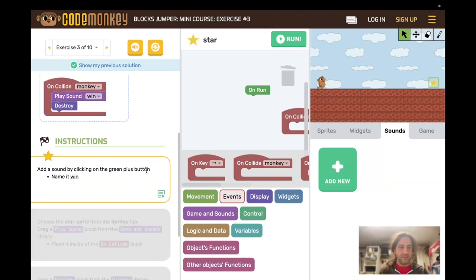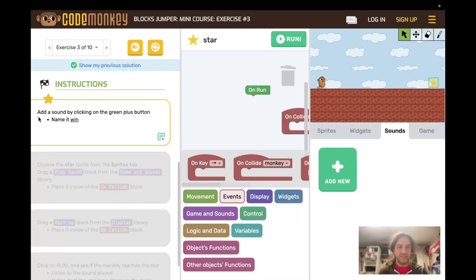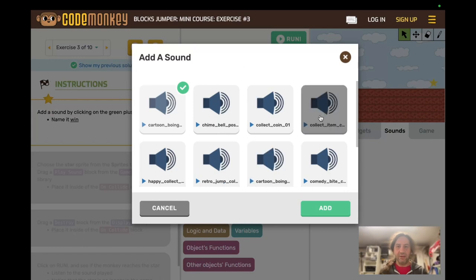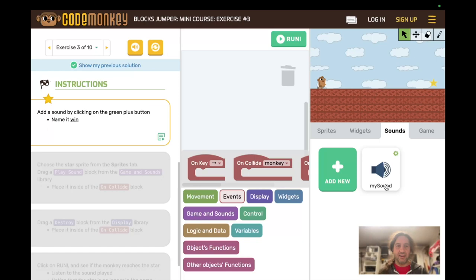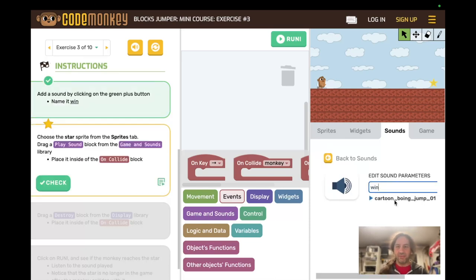Okay now we're in the star and it tells us a lot of things about on collide. But the first instruction is add a sound by clicking on the green plus button. So they've pre-selected the sounds tab. If the student is clicked off of the sounds tab they won't know what's going on. So sounds tab add new. They can pick any sound and they might have fun with that. You might want headphones to allow them to play the sounds without bothering everyone else. But we'll just add that and we need to name it win. So I click on the sound the little settings icon here and change that to win.